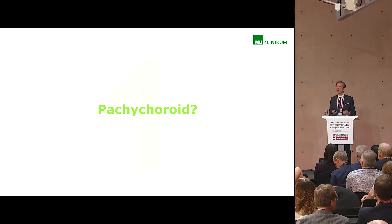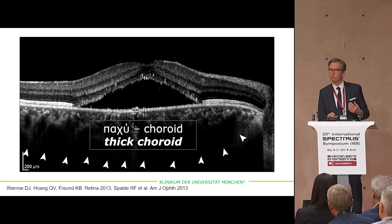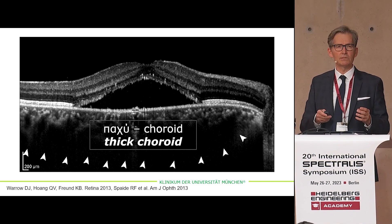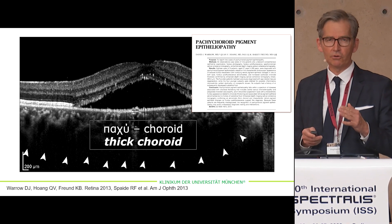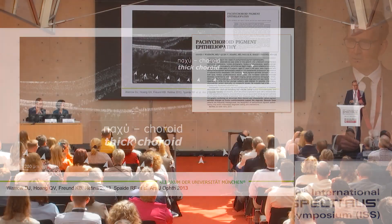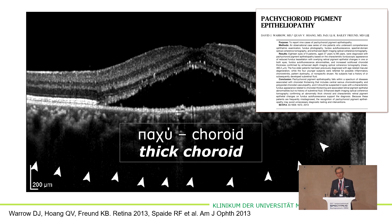Where does the term Pachychoroid come from? Pachychoroid means thick choroid. Since 2004 we know that in central serous choroidopathy and PCV, this is correlated to a thick choroid. However, the term Pachychoroid was first mentioned in 2013 when David Warrer and colleagues described pathologic changes of the RPE, CNV, and polyps in relation to a thickened choroid, and linked to this they gave the name Pachychoroid — the thickened choroid.